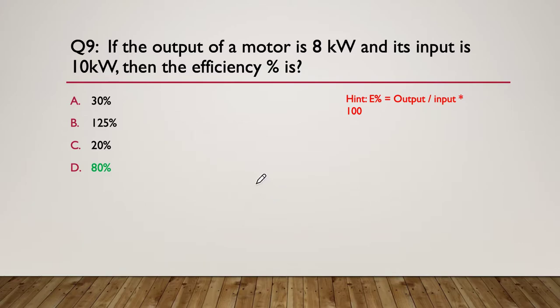In this particular case, 80 percent. Our output is 8. 8 kilowatts divided by 10 times 100. 8 divided by 10 is 0.8 multiplied by 100 is 80 percent.